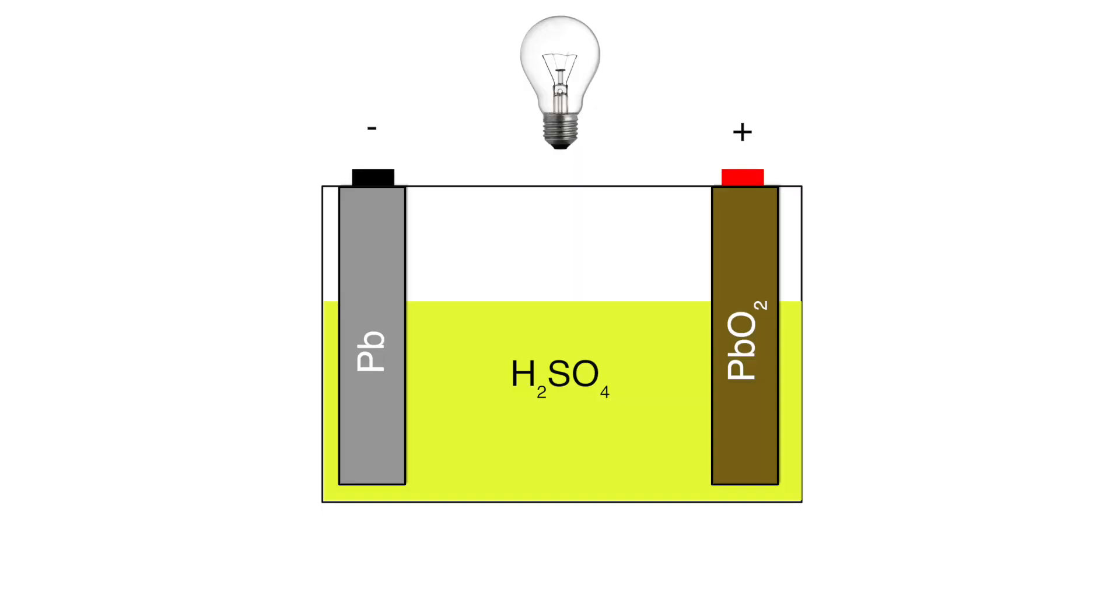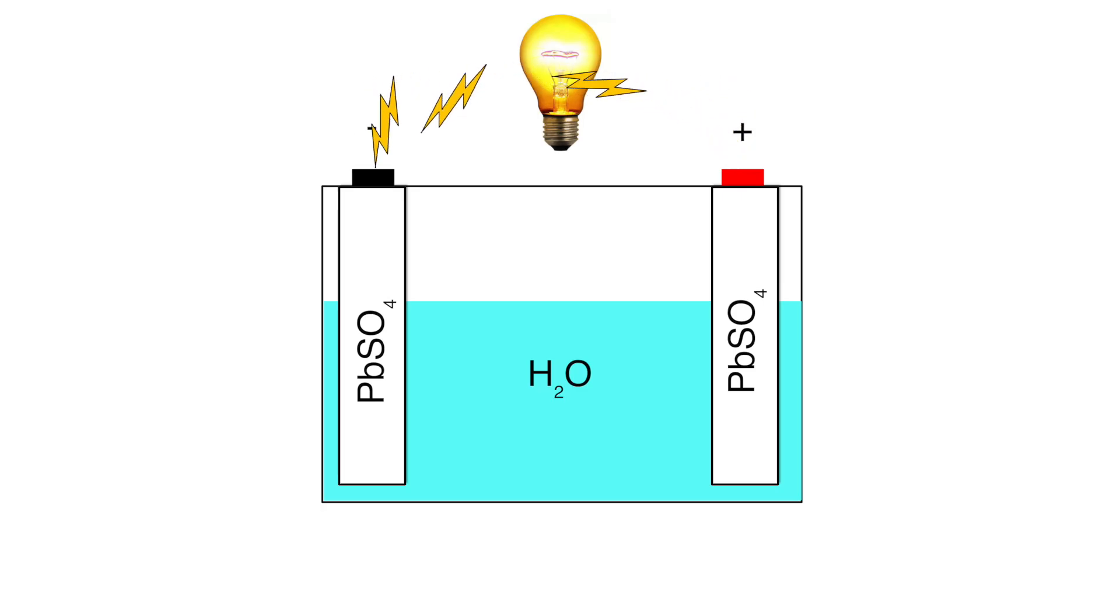In a lead acid battery there are two electrodes, one made of pure lead and the other made of lead oxide. These electrodes are suspended in a fairly concentrated sulfuric acid solution. When you take power out of the battery, the sulfuric acid reacts with the electrodes and converts both the lead and lead oxide into lead sulfate.